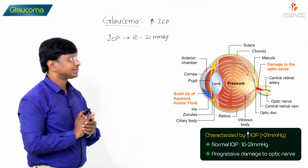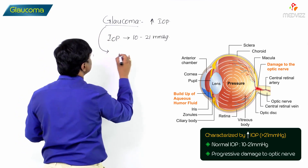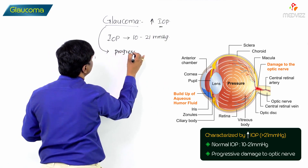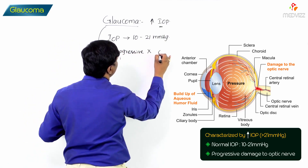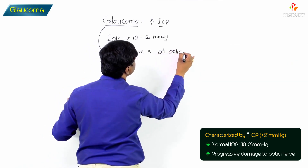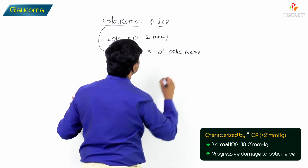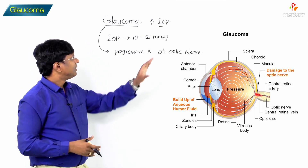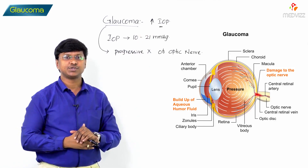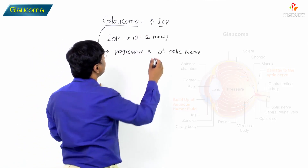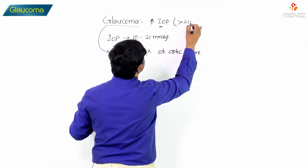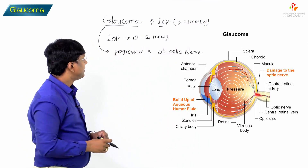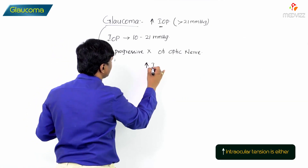Because of raised intraocular pressure over a longer duration, there is progressive damage of the optic nerve. In these individuals, the intraocular pressure becomes more than 21 millimeters of mercury.